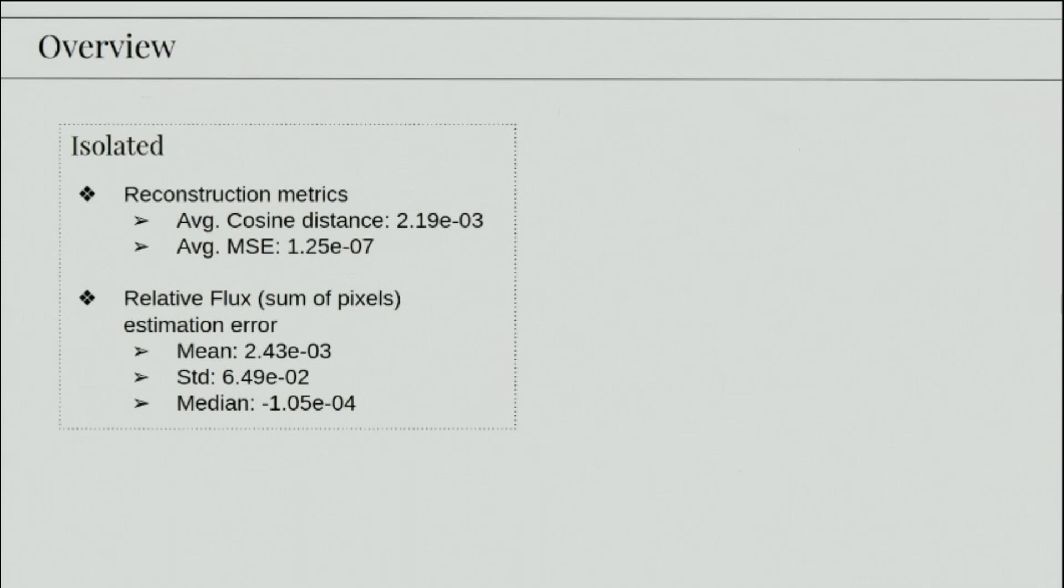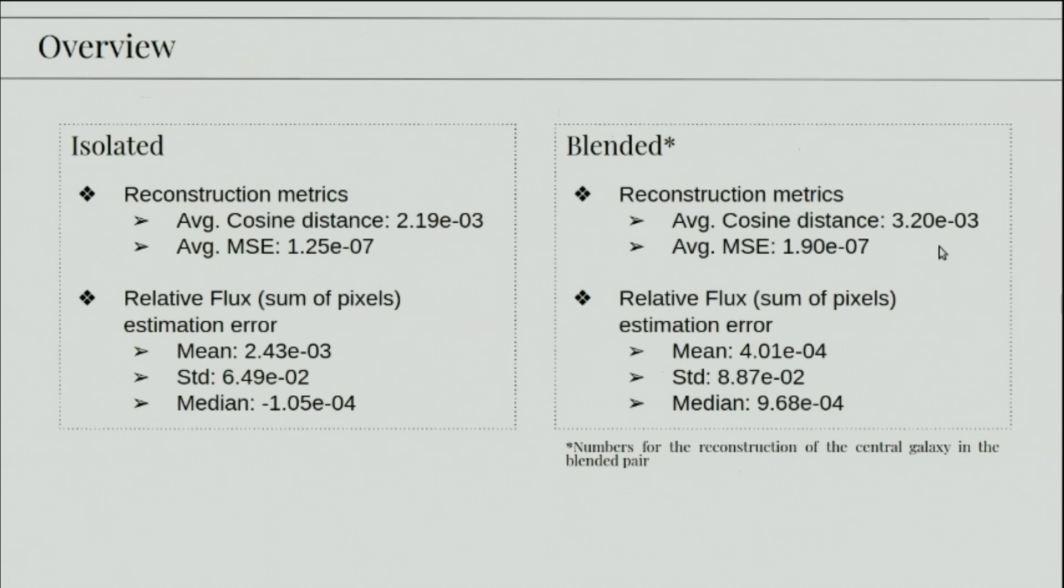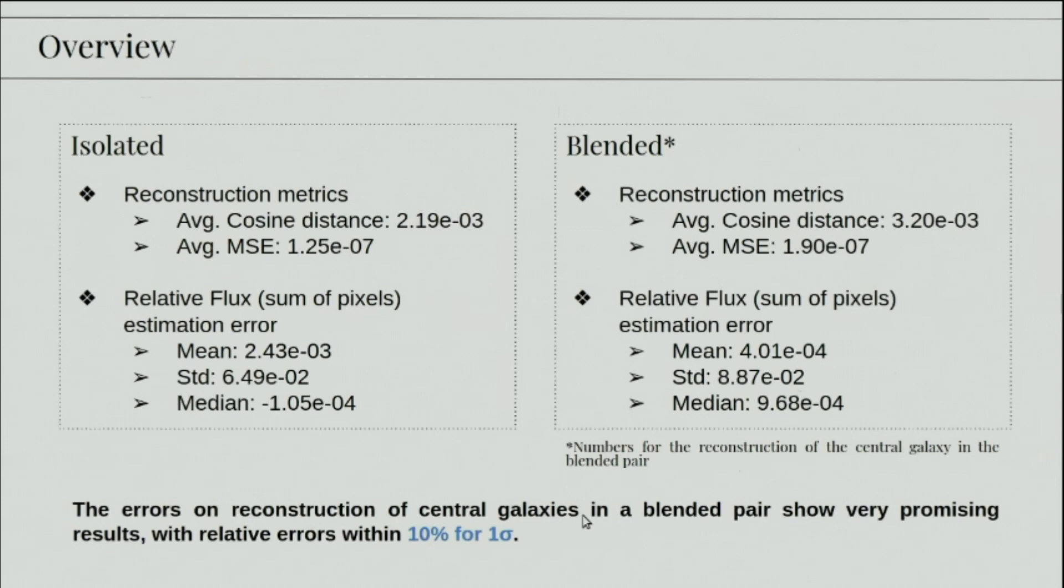So to give an overview, the isolated galaxies gave us unbiased and well-constrained results, which we saw from different metrics like cosine distance, mean square error, and also the relative flux errors. So the means are very close to zero. The standard deviation is within 7%. And this told us that the first network works well, which was used in the second one. And this is working on the blended galaxies, where we got relative flux errors of the order of 10 to the power minus 4 and standard deviation within 10%. So we could say that the errors on reconstruction of the central galaxies in blended pairs show very promising results with relative errors within 10%.